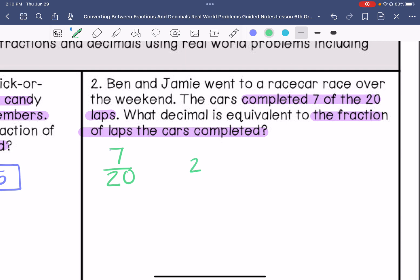So we are going to do seven divided by twenty. Twenty goes into seventy three times. Goes into one hundred five times. So that is 0.35.